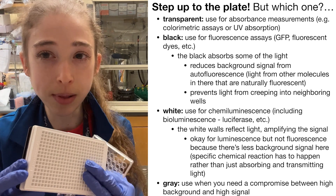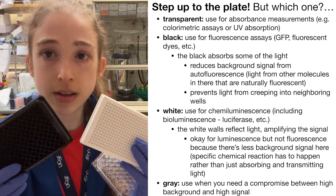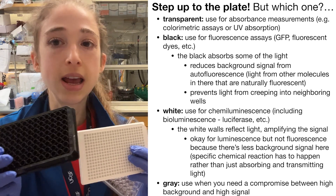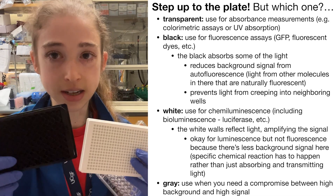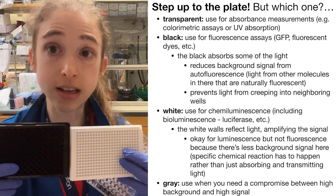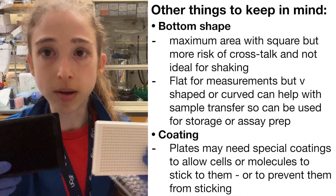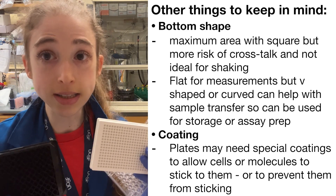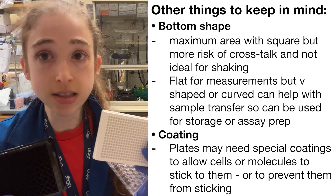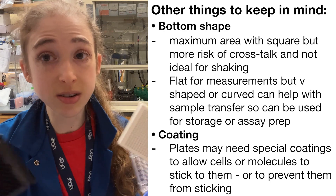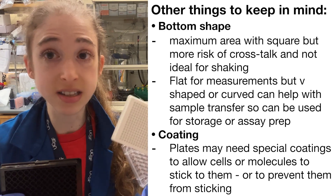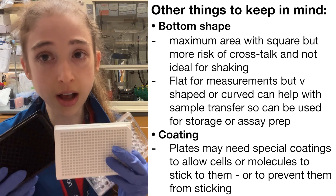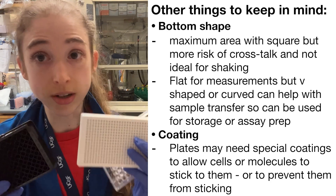Finally, there are also gray plates, which are a compromise between white and black — they reduce a little of the background but don't steal all of your signal, and are used for various applications, or maybe if you need to do both luminescence and fluorescence measurements. There are also other considerations like coatings and well sizes that we won't get into here. But in terms of color, hopefully that helped you understand when to choose which plate color and why.